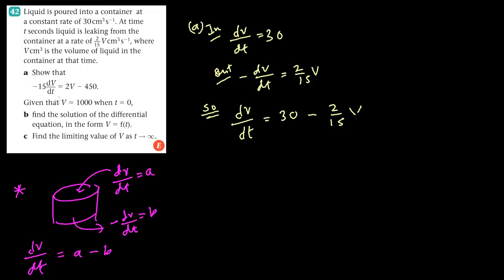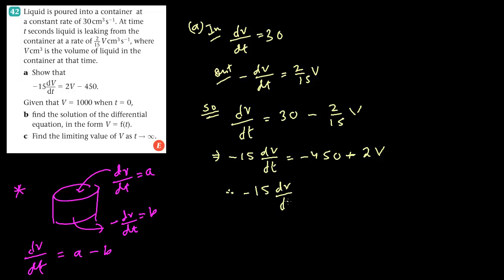Now we have the equation, but we have to express it in the format asked in the question. We multiply both sides by minus 15. On the left hand side we get minus 15·dV/dt. On the right hand side, minus 15 times 30 is minus 450, and minus times minus gives plus 2V. Therefore, minus 15·dV/dt equals 2V minus 450.